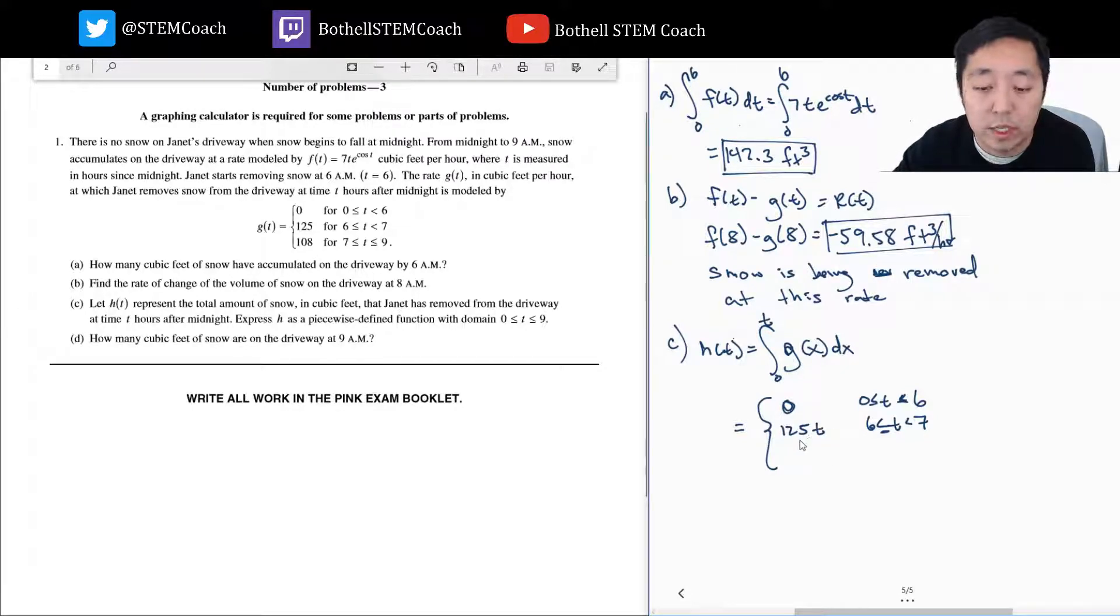Once we get to 6 less than or equal to t less than 7, then we can start doing the integral of this, which is just 125(t - 6), because at 6 hours she hasn't removed any. At 6 a.m. she's just started, so she hasn't removed any snow. By 7, she's removed one hour's worth of snow, which is 125 because this is 125 cubic feet per hour. And then here it's going to be 108(t - 7).